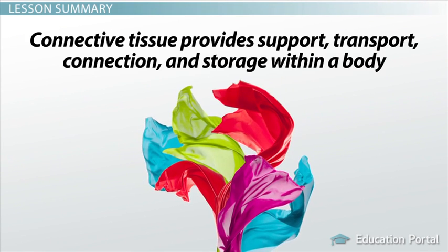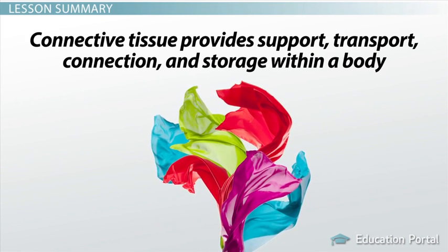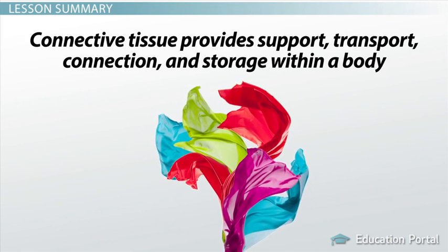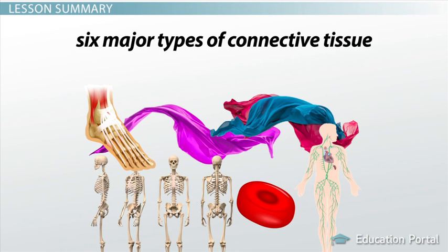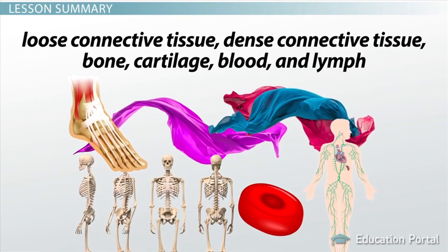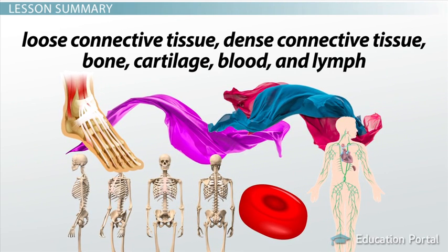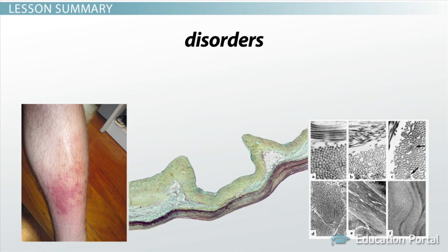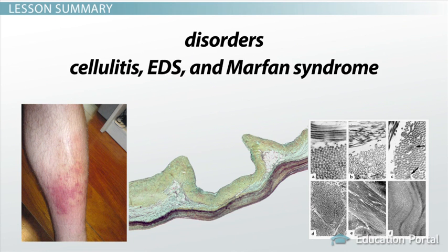Connective tissue provides support, transport, connection, and storage within a body. There are six major types of connective tissue, including loose connective tissue, dense connective tissue, bone, cartilage, blood, and lymph. There are many disorders involving connective tissue, including cellulitis, EDS, and Marfan syndrome.